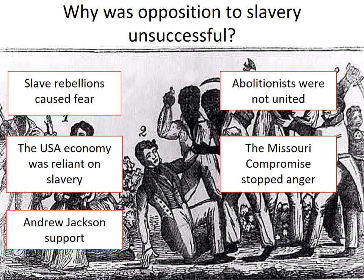So, looking at the big question of why was opposition to slavery unsuccessful, we have five reasons: slave rebellions split opinion and caused fear; abolitionists weren't united; the United States economy was completely reliant on slavery; the Missouri Compromise stopped potential conflict and anger; and Andrew Jackson's support for slavery meant that opposition, despite the fact it was growing, was never going to stop the growth of slavery — it really was like a juggernaut during this period, getting bigger and bigger.